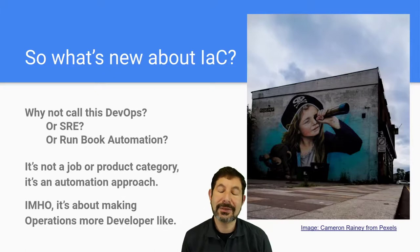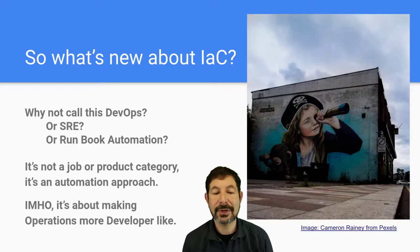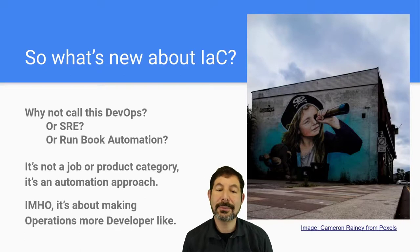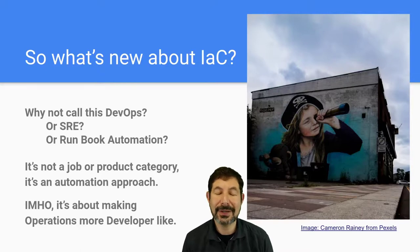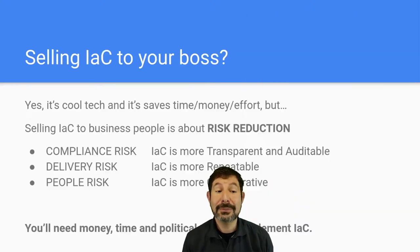Very much like how DevOps is a union between developers and operators, it's really about taking operations and operational work — infrastructure — and making it more developer-like. What I often think of is the CIO pounding on the desk saying, 'Why can't my ops team be more like my development team?' That's what infrastructure as code is about. And it's a good practice.